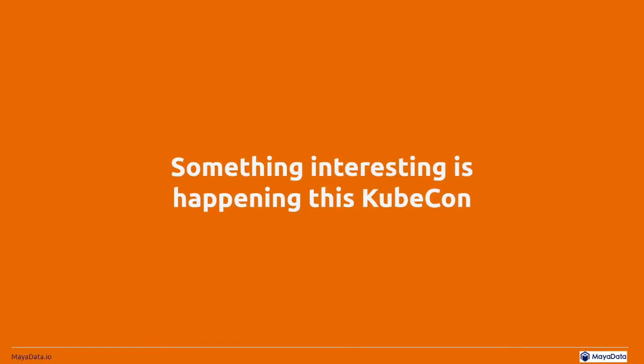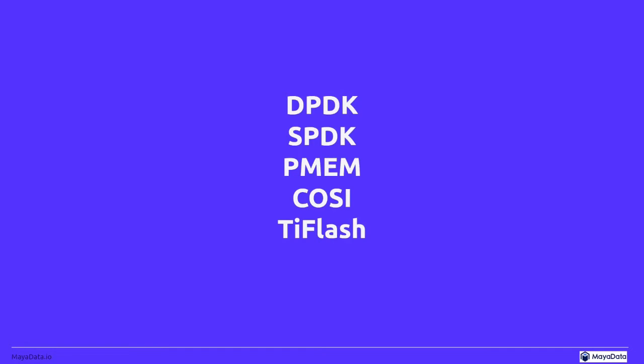Operators and CSI have dominated the conversation at past KubeCons, and they're certainly present at this KubeCon. But other acronyms you're going to see a lot more of are things like DPDK and SPDK — two projects we'll talk about in a little bit. They're related to speed. PMM is also related to speed; it has a CSI driver that Intel worked on. It's persistent memory, meant to help speed up workloads.